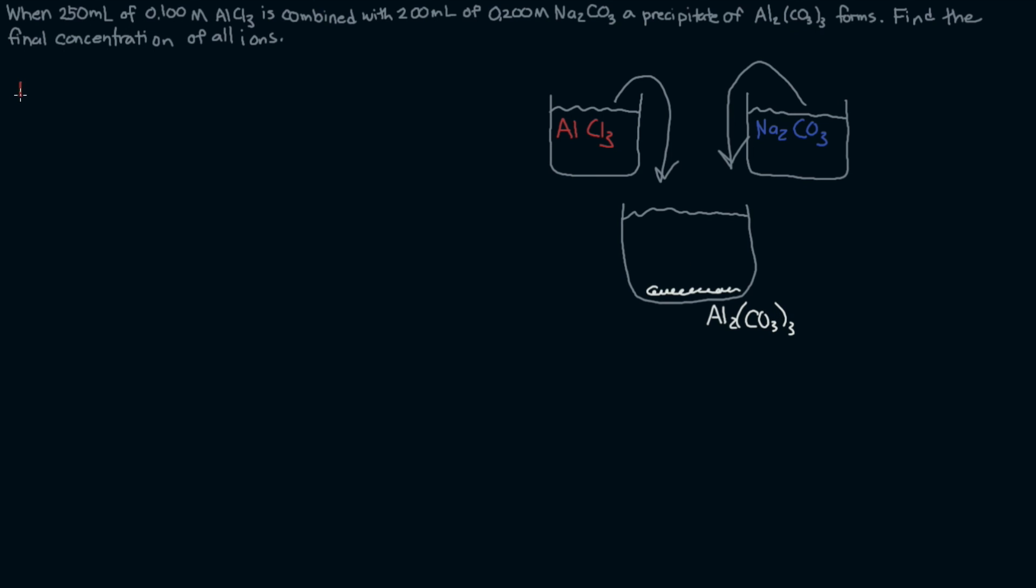We have aluminum chloride in aqueous state being combined with the sodium carbonate, also in an aqueous state, making our precipitate Al2(CO3)3 that's in the solid state and NaCl in the aqueous state because they have not participated in the reaction in any way. They're just still floating around. And then to balance this we need two of these and three of these and six of these.